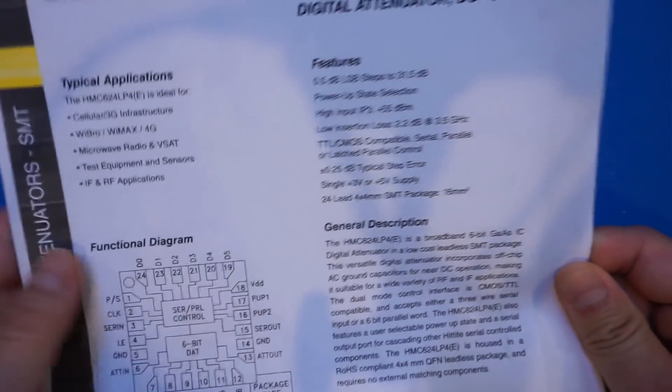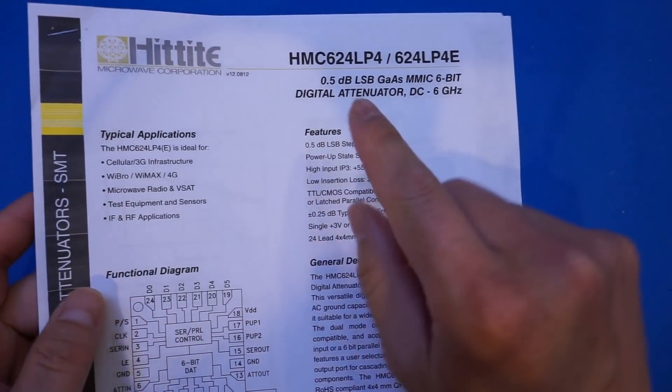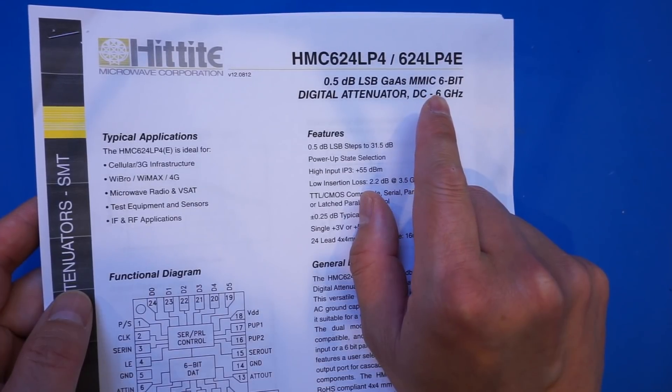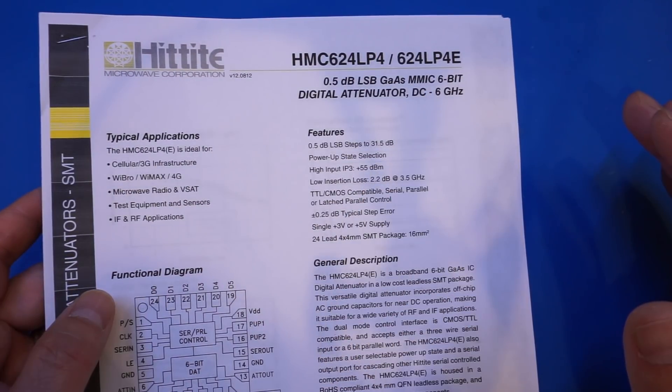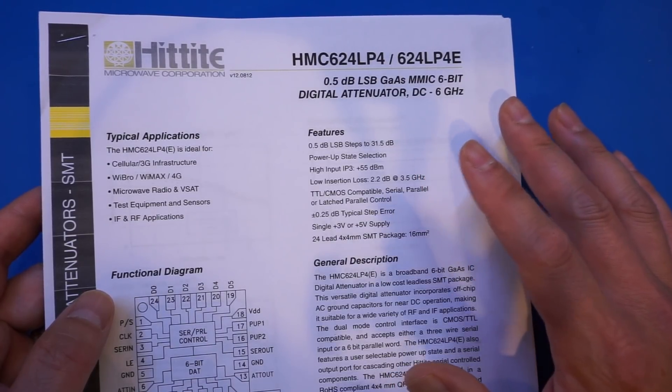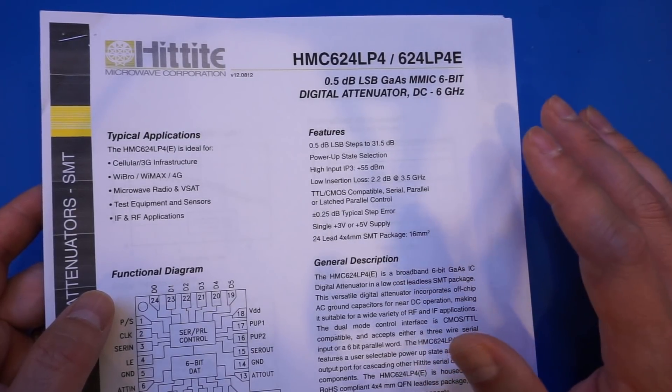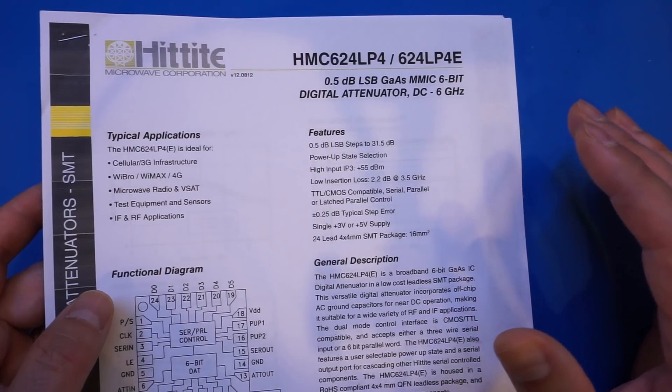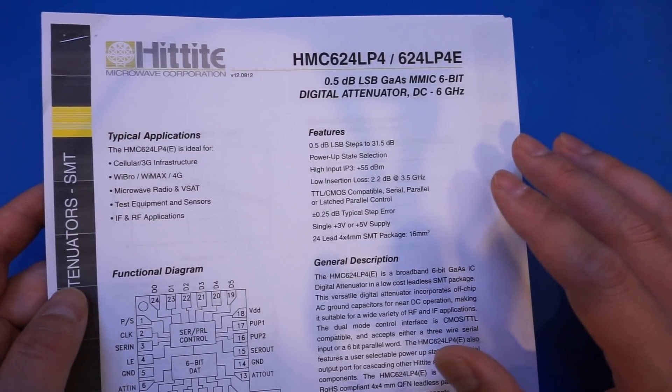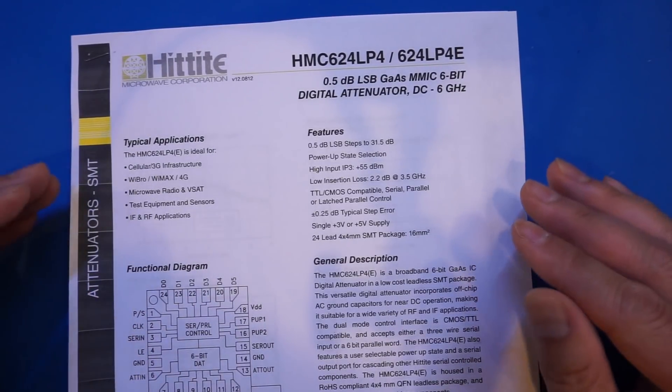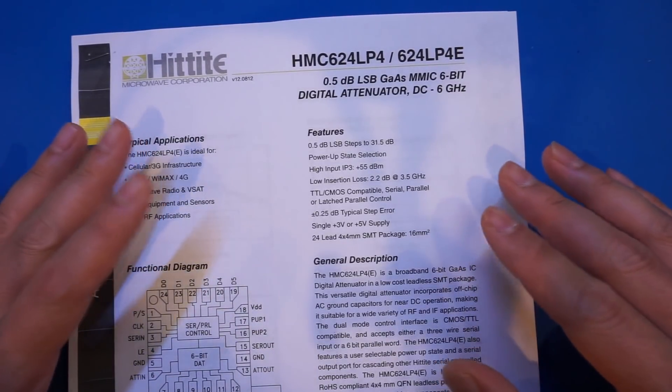And if you look at the datasheet here, this is the Hittite part again, you will see that the chip is referred to as an MMIC, which stands for monolithic microwave IC. And depending on the required operating frequencies, these kinds of chips can be fabricated using gallium arsenide, which has a higher electromobility compared to that of silicon. And it translates into higher switching speeds, and thus allowing higher operating frequencies.